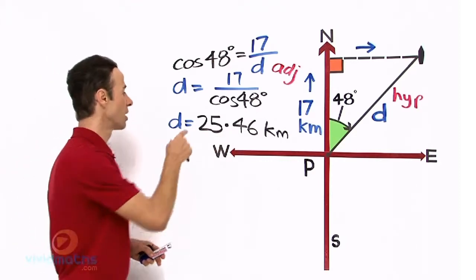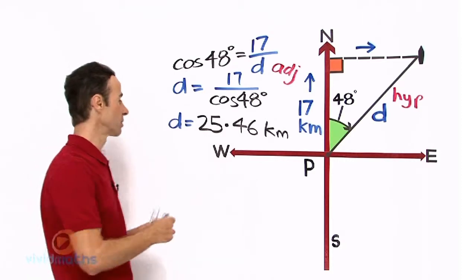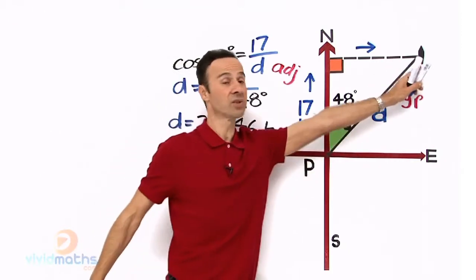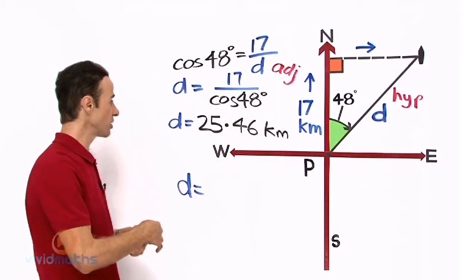.4 goes downwards, so therefore it goes to 25. So to the nearest kilometer, the ship from port to where it is now, the distance is 25 km.